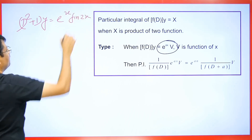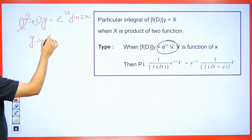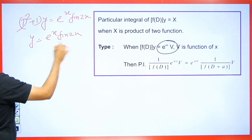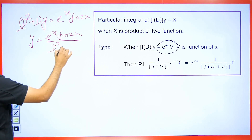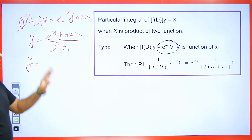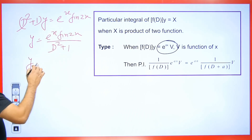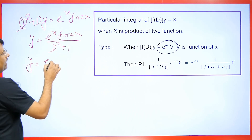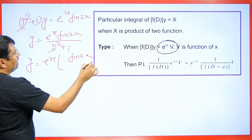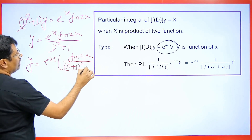So that's the equation we get. To find the PI of this, we apply the rule I mentioned: e raised to the power x times sin 2x divided by D squared plus 1. Wherever we have e raised to the power x, we take it outside and get sin 2x divided by the whole square of D plus 1, and then plus 1.